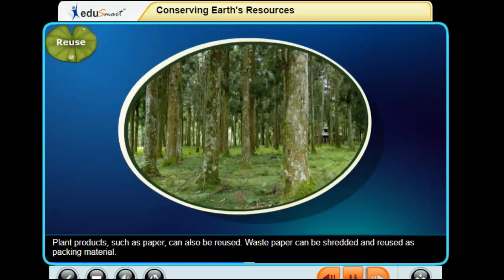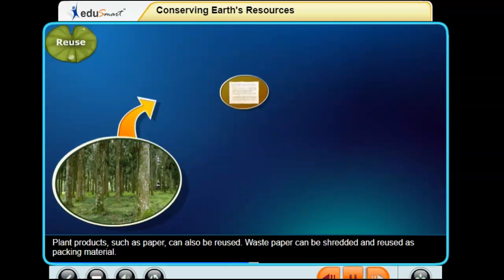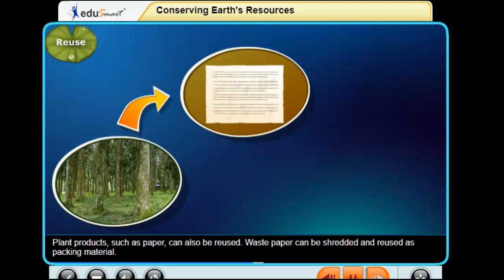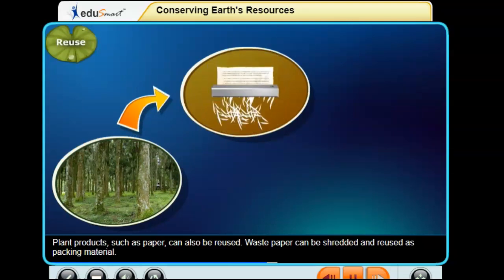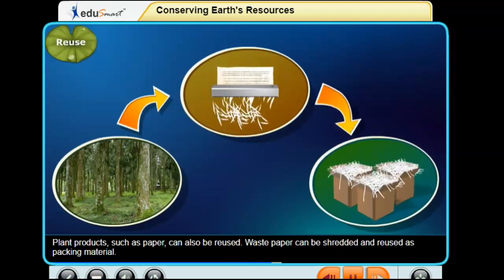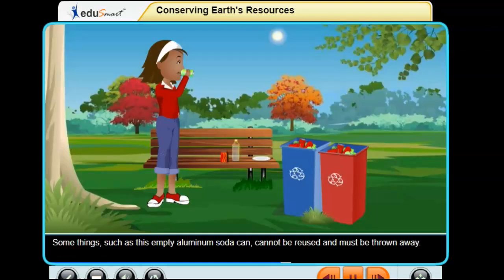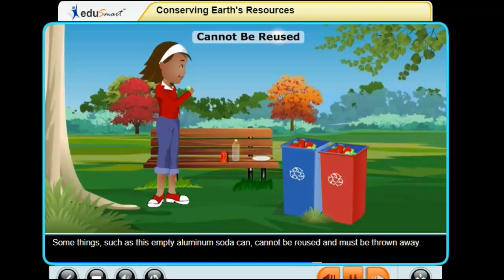Plant products such as paper can also be reused. Waste paper can be shredded and reused as packing material. However, some things such as an empty aluminum soda can cannot be reused and must be thrown away.